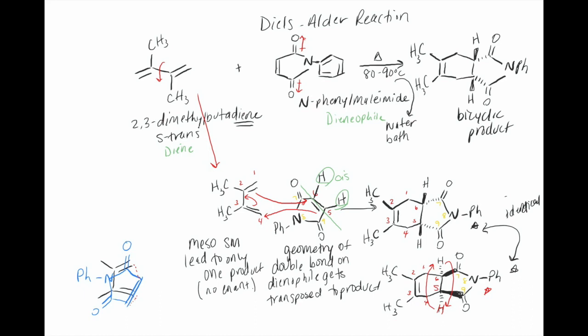The diene and the dienophile are both symmetrical, which means that when they react you can only ever form one product because it doesn't matter how they are oriented to each other. Now the stereochemistry: we start with two achiral molecules, and as a result we're going to make an achiral product. In this case we have stereocenters, but this molecule has a plane of symmetry — it's meso — so it's not technically chiral. These two molecules are the same, so it doesn't matter if you draw the hydrogen up and the carbon on a dash or the carbon on a wedge. We start with two achiral symmetrical molecules and produce a meso product.